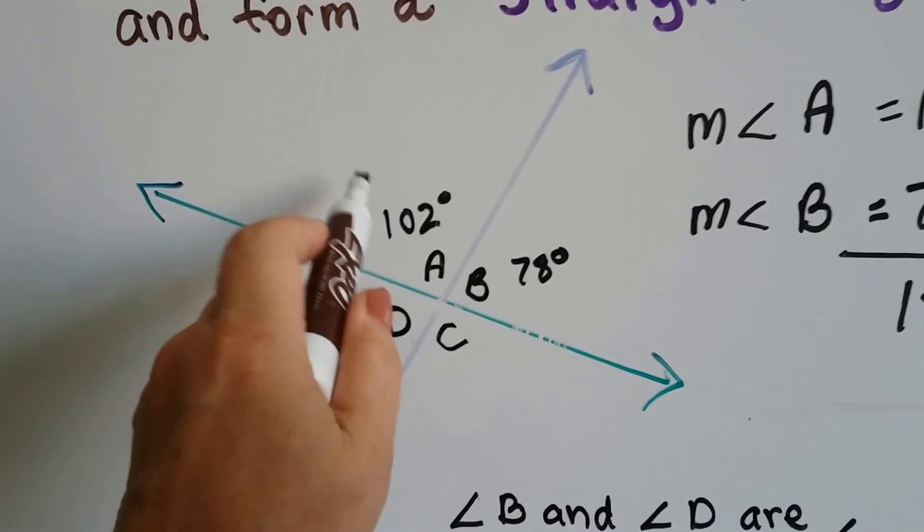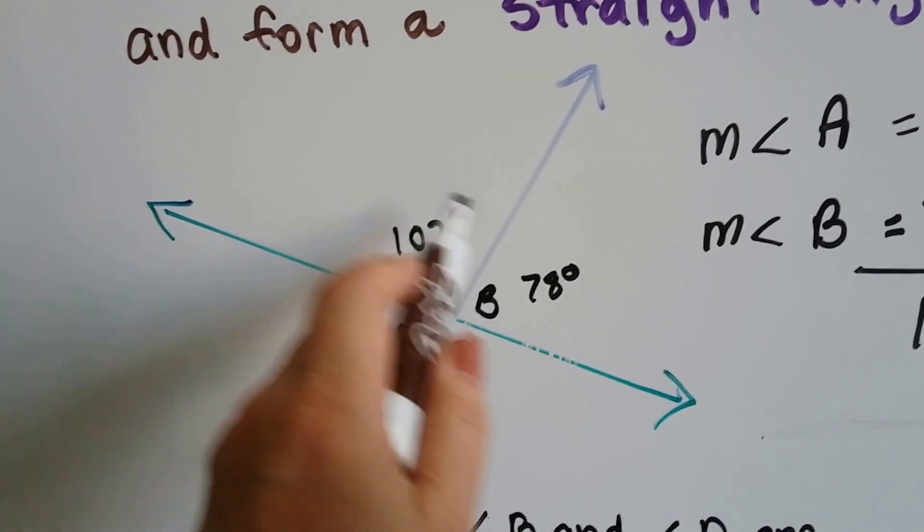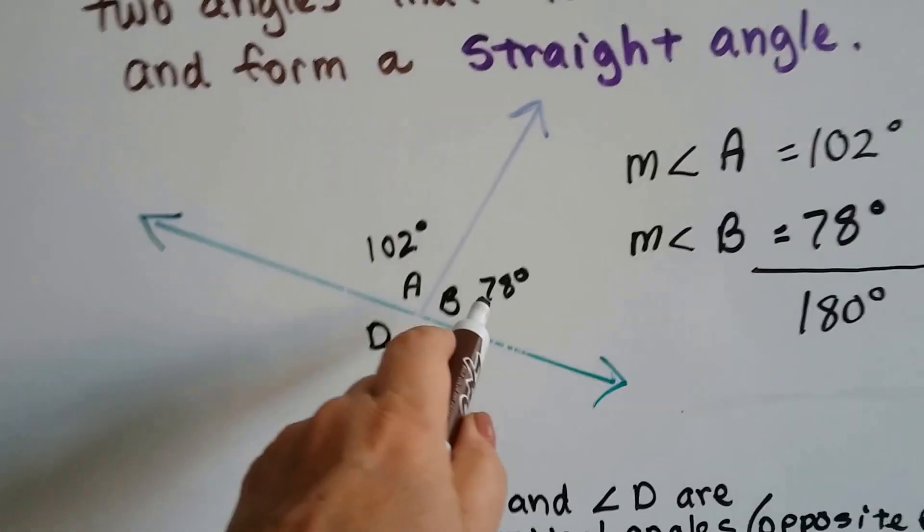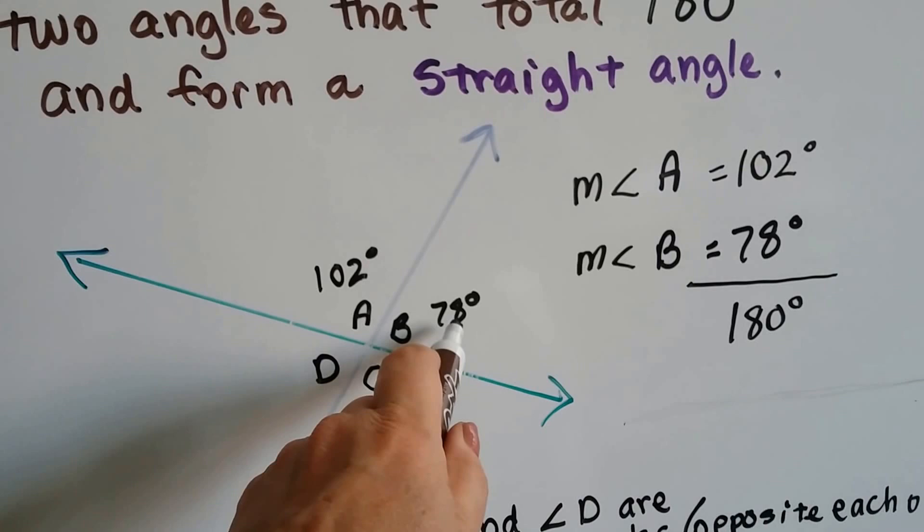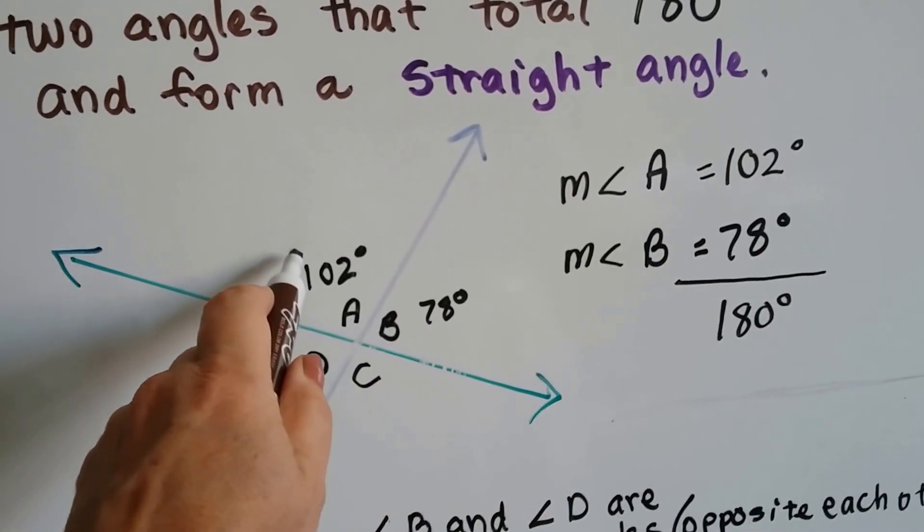So if you know that angle A is 102 degrees, you could subtract it from the 180 to find out that B is 78. And if this is 78, all you have to do is subtract the 78 from the 180 to know that that's 102.